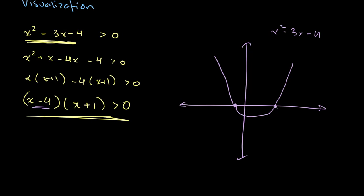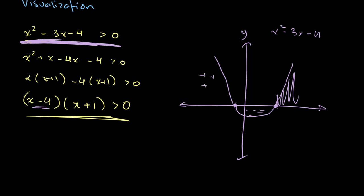Now, in our original inequality we have x squared minus 3x minus 4 is greater than 0, so we want to look at all the points on our graph where the value for y is greater than 0. From the right intercept onwards, all of those points are positive. Between the two intercepts, all of those points are negative. And to the left of the left intercept, all of those points are positive.